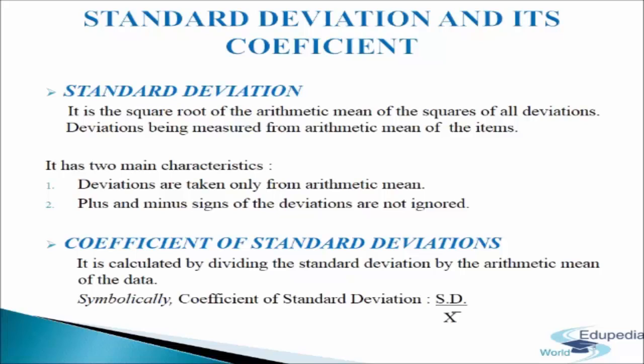Standard deviation is the square root of the arithmetic mean of the squares of the deviations of the items from their arithmetic mean. In the words of Spiegel, the standard deviation is the square root of the arithmetic mean of the squares of all deviations, deviations being measured from the arithmetic mean of the items.